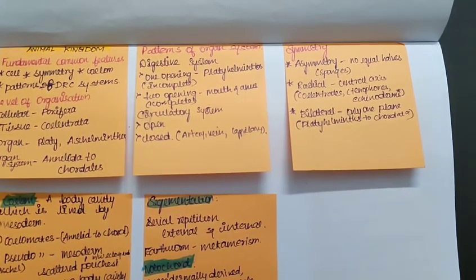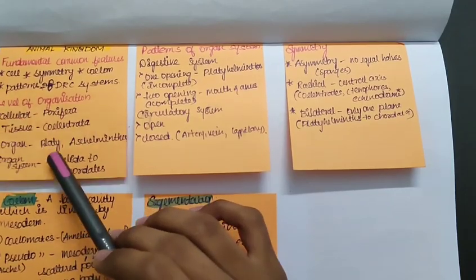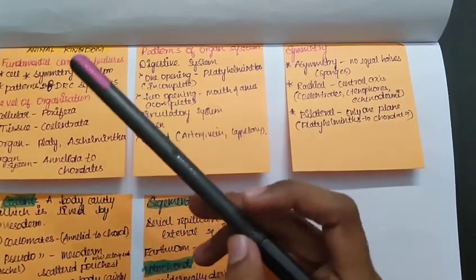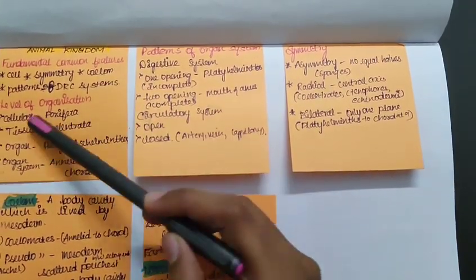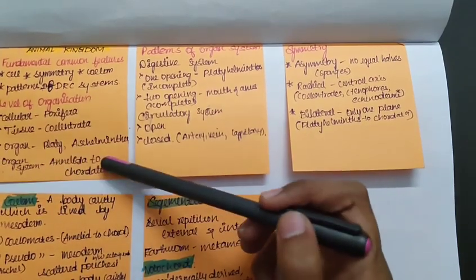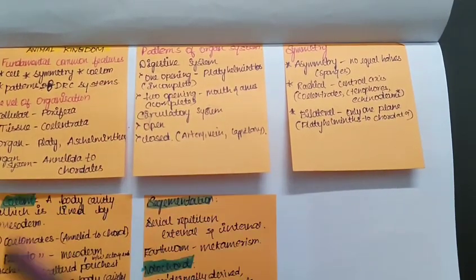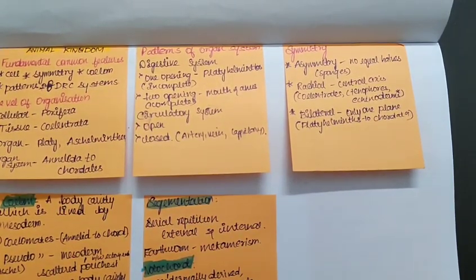So talking about the organ system, that group of tissue which are performing a common function will form an organ. So that is seen in Platyhelminthes and Aschelminthes. So from Annelids to Chordates, we all have the organ system of classification.